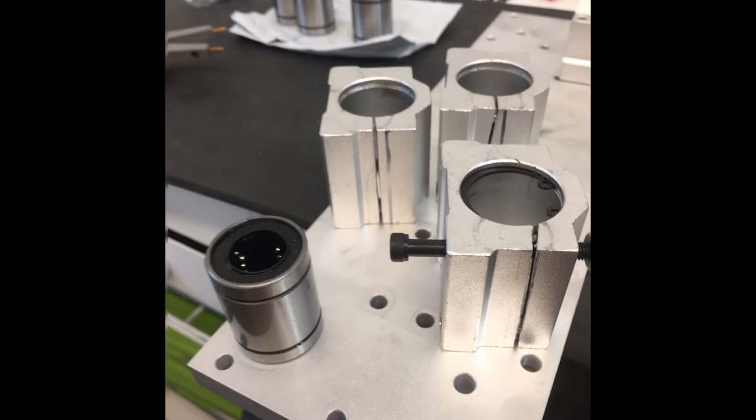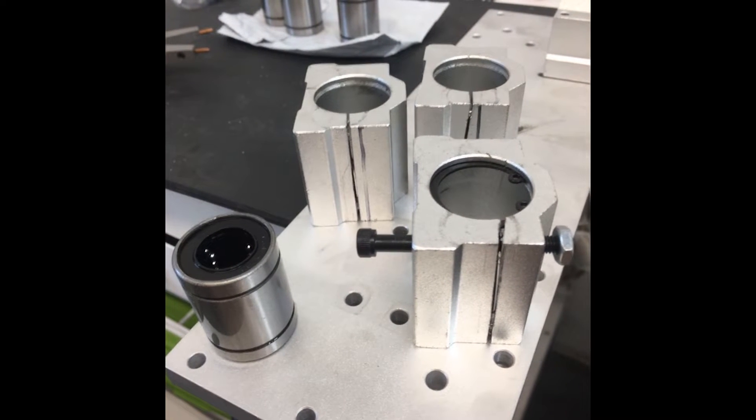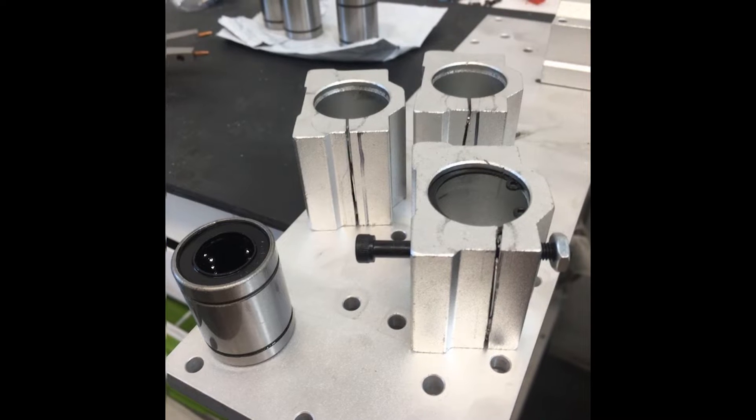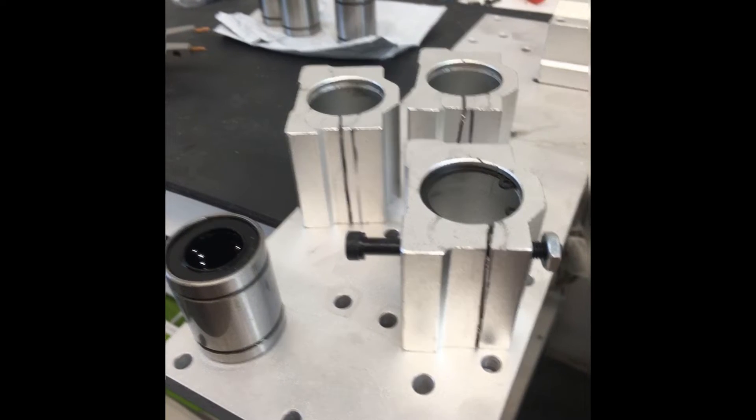So I ordered a new set of linear bearings off eBay, and then I cut a slot in the bearing blocks. This allows the blocks to clamp down onto the linear bearing, and it takes out that excess play that was in the block.